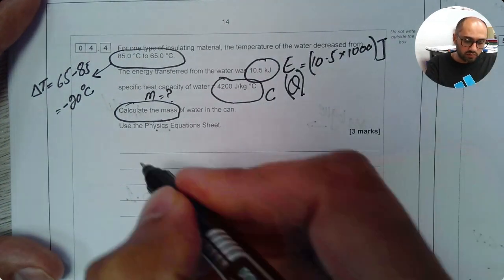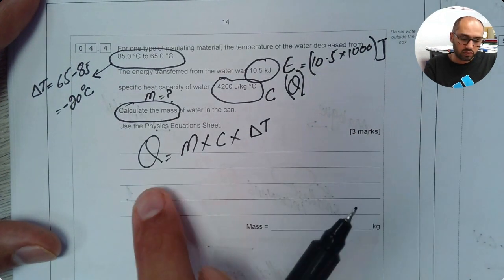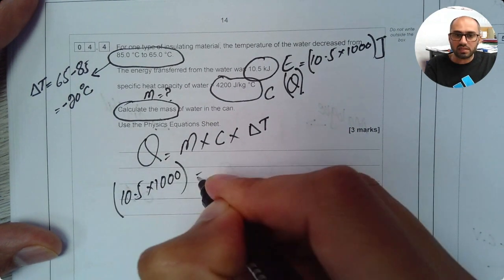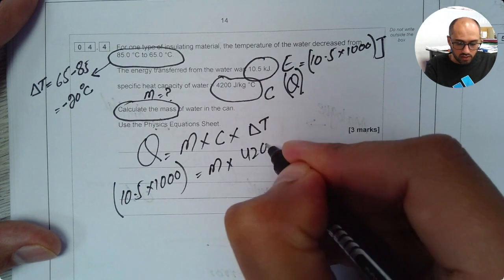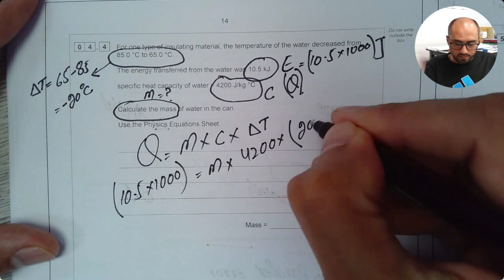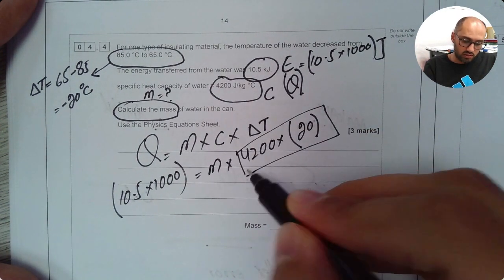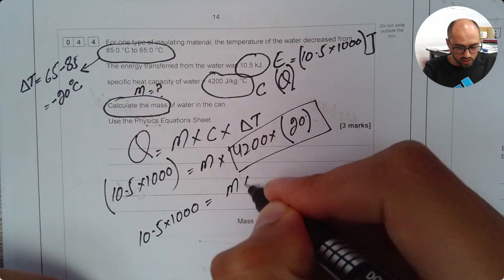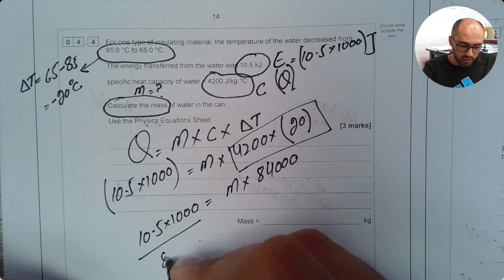So the equation that we are going to use is Q equals M times C times change in temperature. The value of Q is known which is 10.5 times 1000. The value of mass is not known so I'll keep it as M. The value of C is known which is 4200 and the value of change in temperature which we worked out here is also known this will be 20. Once I've done this I can multiply them two numbers. So it will be 10.5 times by 1000 equals M times 84000. We divide both sides by 84000.